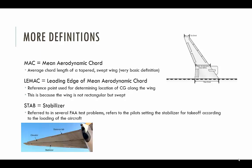The mean aerodynamic chord (MAC) is the average chord length of a tapered and swept wing. Transport category aircraft have swept wings because they fly at higher speeds, so we use an average chord length instead of a simple rectangular wing. The leading edge of the mean aerodynamic chord (LEMAC) is the reference point used to determine where the center of gravity falls along the wing.